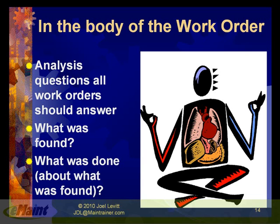If it's a corrective job, what work are we looking for? The body of the work order is where all the real heavy data is. There are two questions I want you to be able to answer from looking at the body of any corrective work orders. The first one is: what was found by the person who went to look at the job? Did they find something broken, corroded, messed up? The second thing is: what did they do about what they found? Did they replace it? Did they repair it?